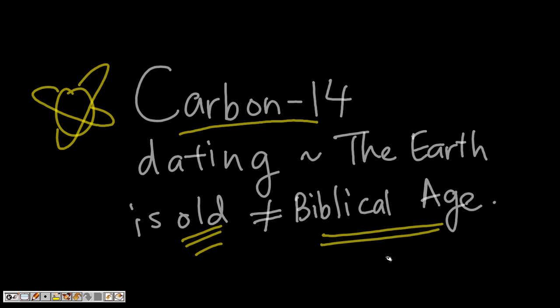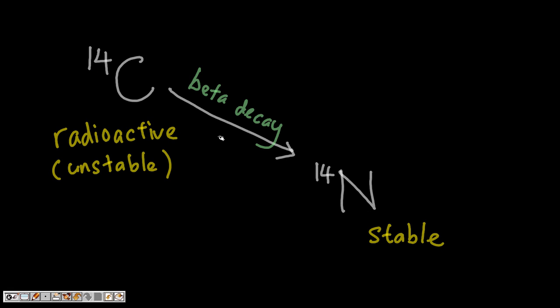How do we answer this question? Carbon-14 is used for dating because it is unstable - in other words, it is radioactive. Radioactive means that carbon-14 will decay in a process called beta decay, and it will decay into a stable element that is nitrogen-14.